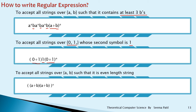To accept all strings over {a, b} that are of even length: write (A + B)(A + B) in a bracket — this gives exactly 2 symbols — then raise the whole bracket to star. Repeating gives lengths 2, 4, 6, and so on. The star means it can occur or not, so lengths 0, 2, 4, 6 are covered. The regular expression is ((A + B)(A + B))*.